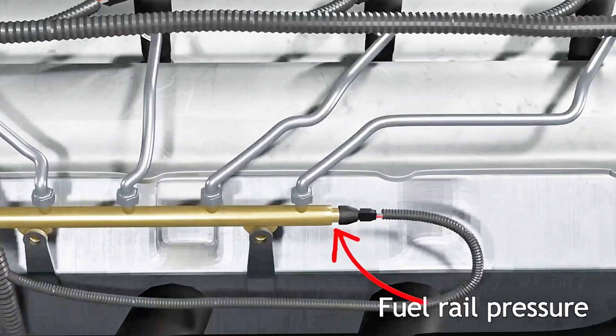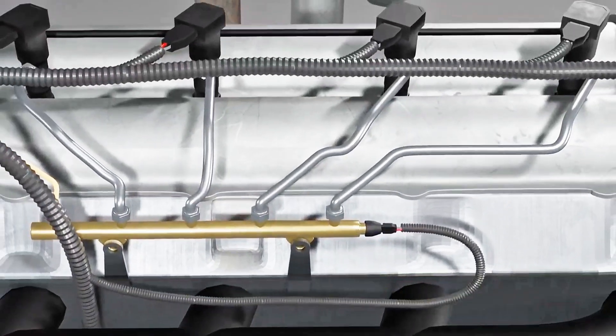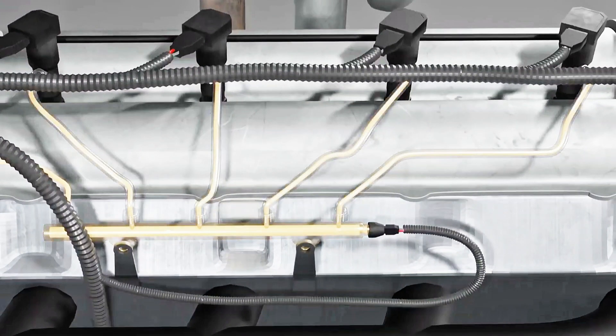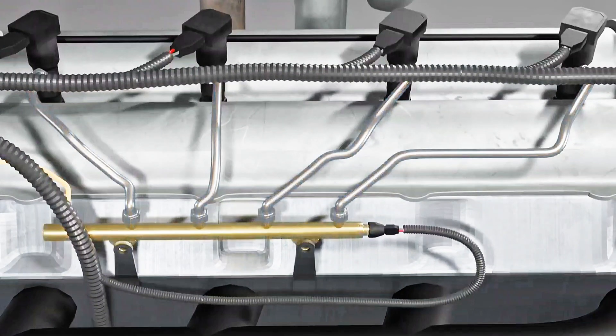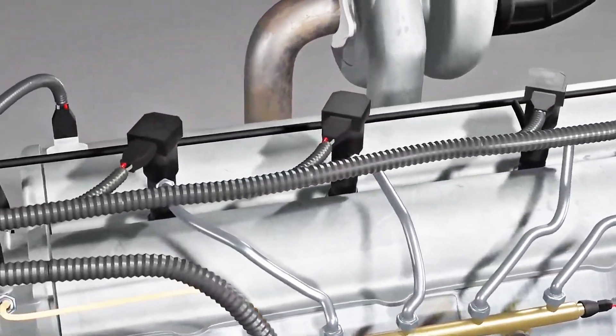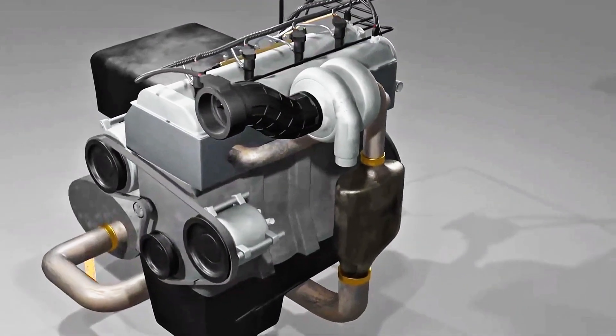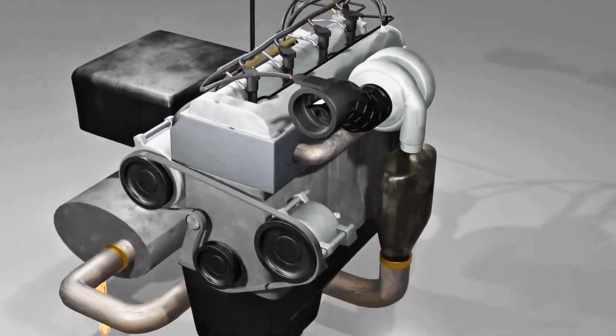The last one is called fuel rail pressure sensor. This functions to determine the injection pressure of the common rail fuel system. That's the main sensor. The more modern the diesel engine, usually the sensors for common rail are also more diverse. But in general, these eight sensors are the most needed by the common rail system.